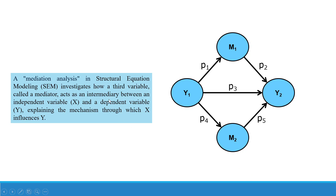A mediation analysis in structural equation modeling investigates how a third variable called a mediator acts as an intermediary between an independent variable X and a dependent variable Y, explaining the mechanism through which X influences Y. In the case of parallel mediation, there will be two mediators M1 and M2. Y1 will directly influence Y2 — that is path P3.